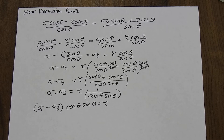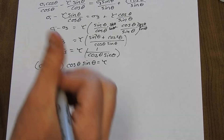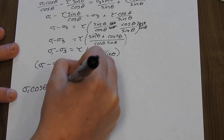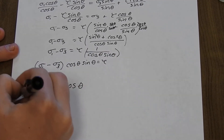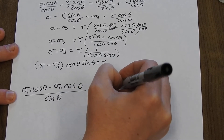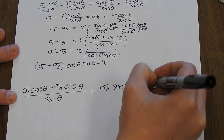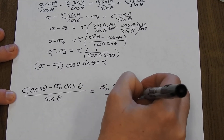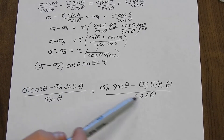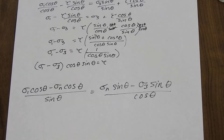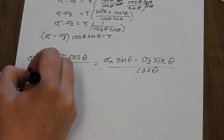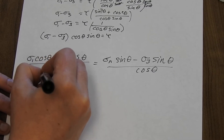We can do the same thing for the normal stresses, setting them equal to each other: sigma_1·cosine(θ) minus sigma_n·cosine(θ) over sine(θ) equals sigma_n·sine(θ) minus sigma_3·sine(θ) over cosine(θ). In this case everything involves cosines and sines with nothing to cancel, so I choose to cross multiply. Cross multiplying gives sigma_1·cosine²(θ) and related terms.